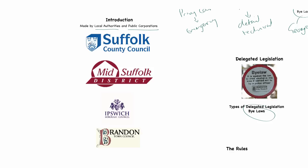Local authorities make laws that apply in their own geographic area, and local authorities are hierarchical. I've used Suffolk here as an example. There is a Suffolk County Council, which will make laws that apply to the entire county. Suffolk also has a Mid-Suffolk District, which will make laws that apply to the district area around Mid-Suffolk, and that is below the county council in the hierarchy.